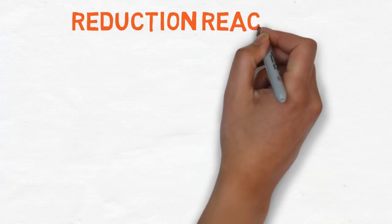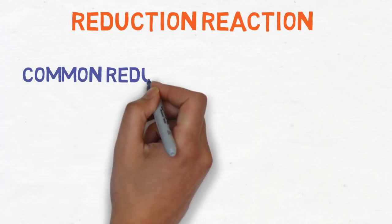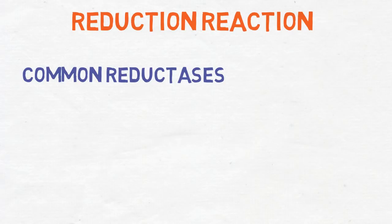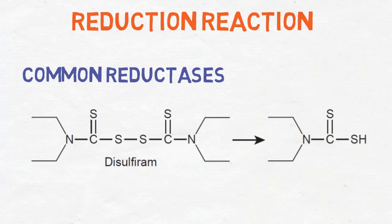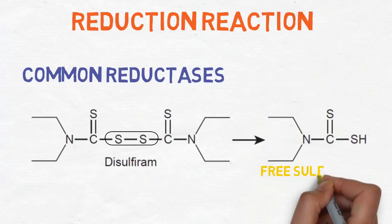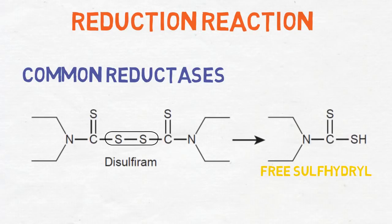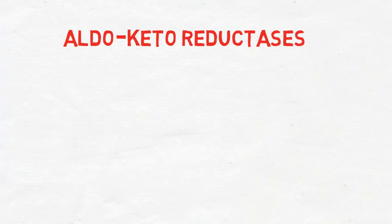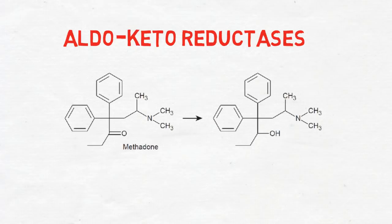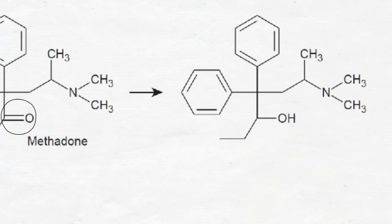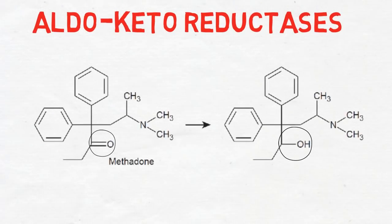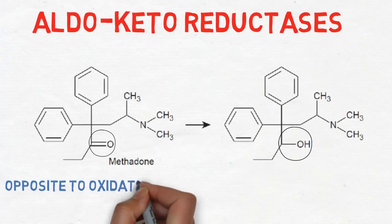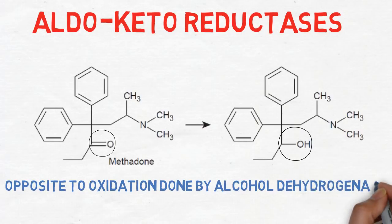Another phase 1 reaction is the reduction reaction. There are several reductase enzymes. Common reduction reactions include the reduction of disulfide bonds, in which disulfides are reduced to free sulfhydryls. Another reduction reaction is done by aldoketoreductases, which reduce carbonyl-containing compounds back to alcohol, in a process opposite to the oxidation done by alcohol dehydrogenase.